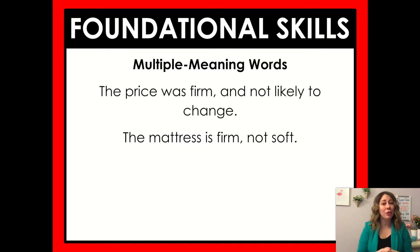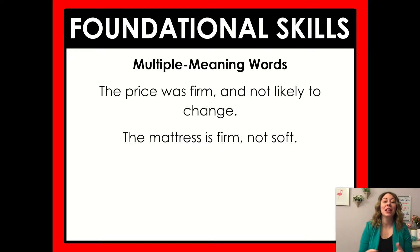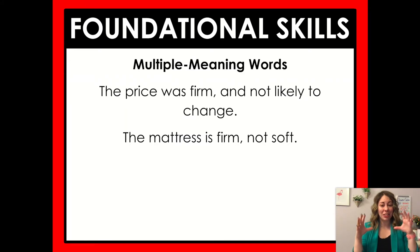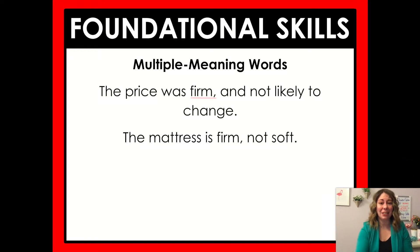So in the first sentence, 'the price was firm and not likely to change' — 'firm' there means it's not changing. But when 'the mattress is firm, not soft,' we're talking about the softness of it. While they could kind of mean the same things where we're not changing a whole lot, we're talking about them in a different context.